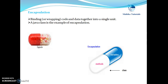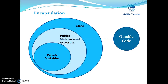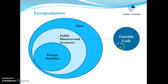So a class is an example of encapsulation. Now how can we achieve encapsulation? Encapsulation can be achieved by keeping the data members hidden from the external world. Here we can declare our data members as private so that they are not accessible to the outside code. These private variables are accessible to the methods of the class only, and if they are to be accessed by outside code it can be done using mutators and accessors which are public.